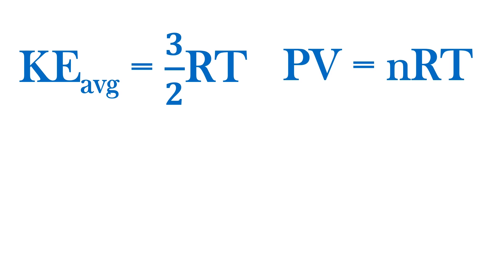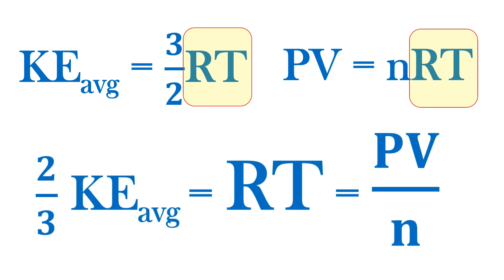Recall the ideal gas law is PV equals nRT. If we set both sides of the equation equal to RT, we see that two-thirds kinetic energy is equal to PV over n. Let's discuss how we arrive to this elegant thermodynamic relationship.